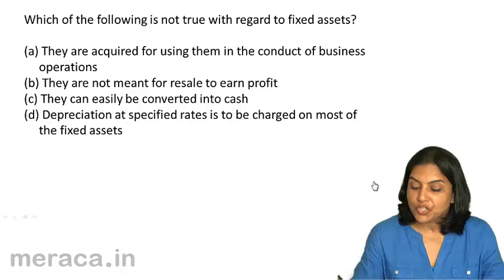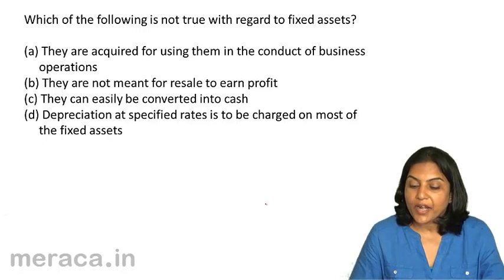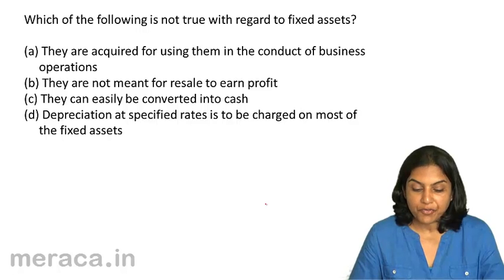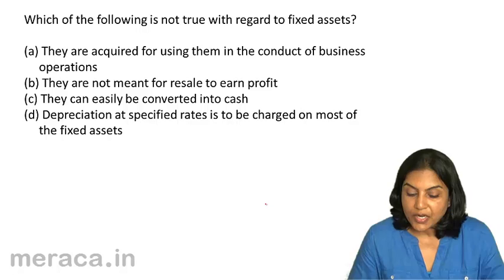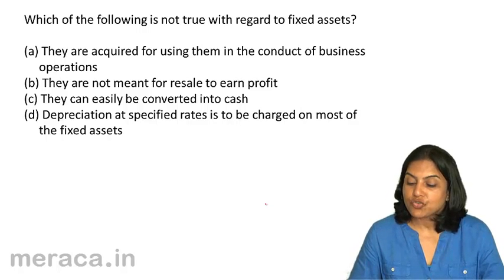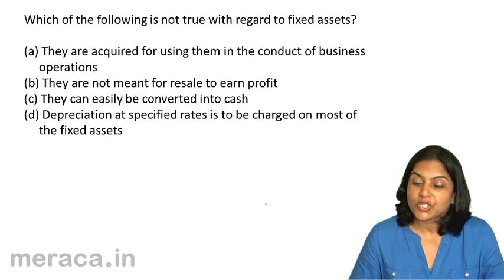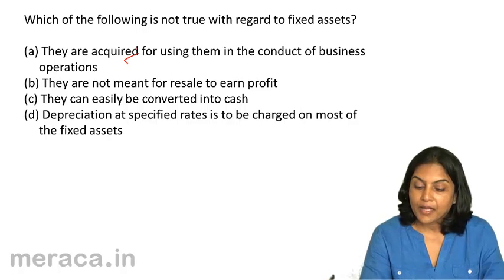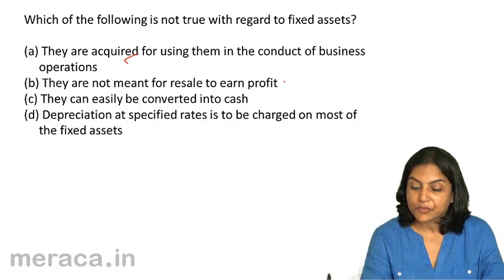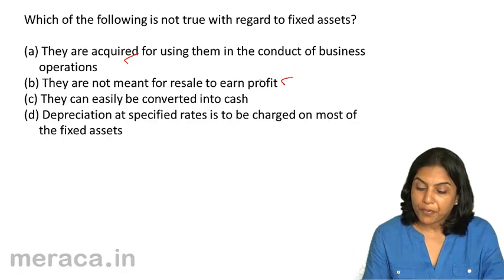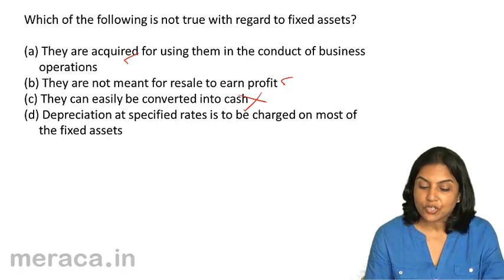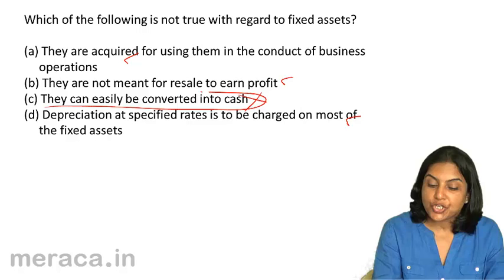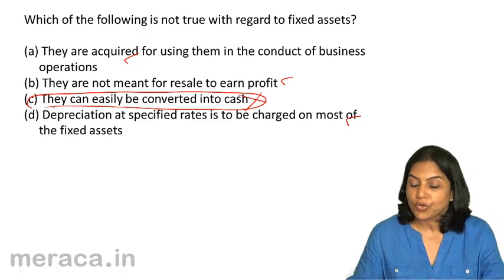Which of the following is NOT true with regard to fixed assets? A. They are acquired for using them in the conduct of business operations. B. They are not meant for resale to earn profit. C. They can easily be converted into cash. D. Depreciation at specified rates is to be charged on most fixed assets. Fixed assets are acquired for use in the business — true. Not meant for resale — true. Can easily be converted to cash — NOT true. The correct answer is C.